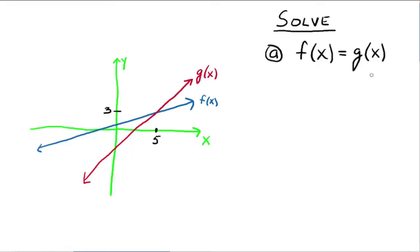What this notation is asking us to find are all the values for x that make the values for f and the values for g be the same. In other words, what x values make the y values of f and the y values of g equal? Since our graph intersects at the point (5, 3), when x is 5, both f and g have the same y value — they're both equal to 3. So the solution is x equals 5.